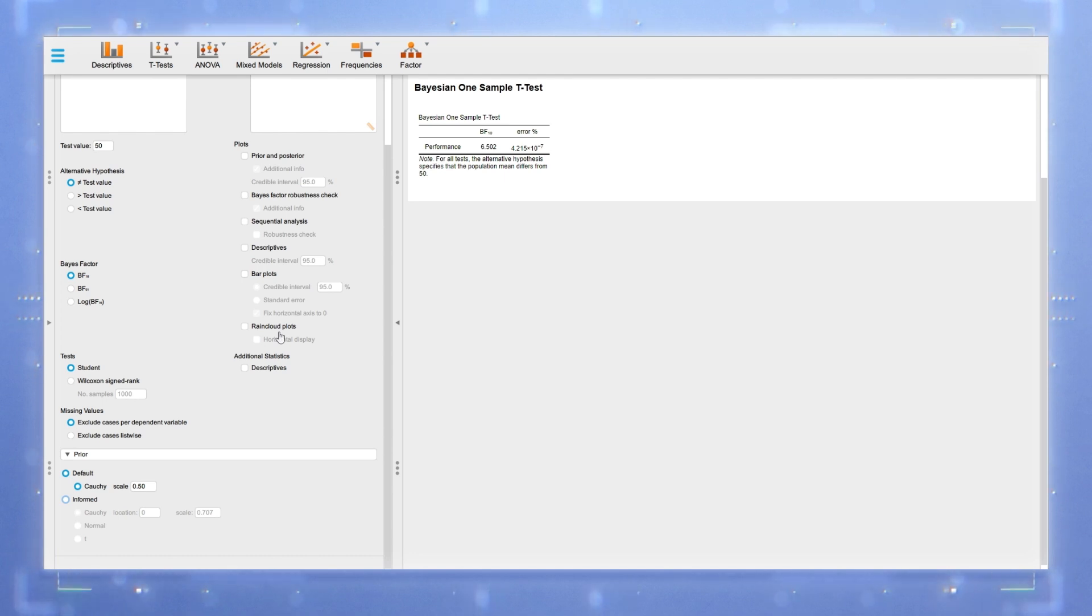Computing the Bayesian one-sample t-test yields a Bayes factor value of 6.5. This means that our data are 6.5 times more likely to have occurred under the alternative hypothesis H1 than under the null hypothesis H0, which provides evidence for the former in comparison with the latter.